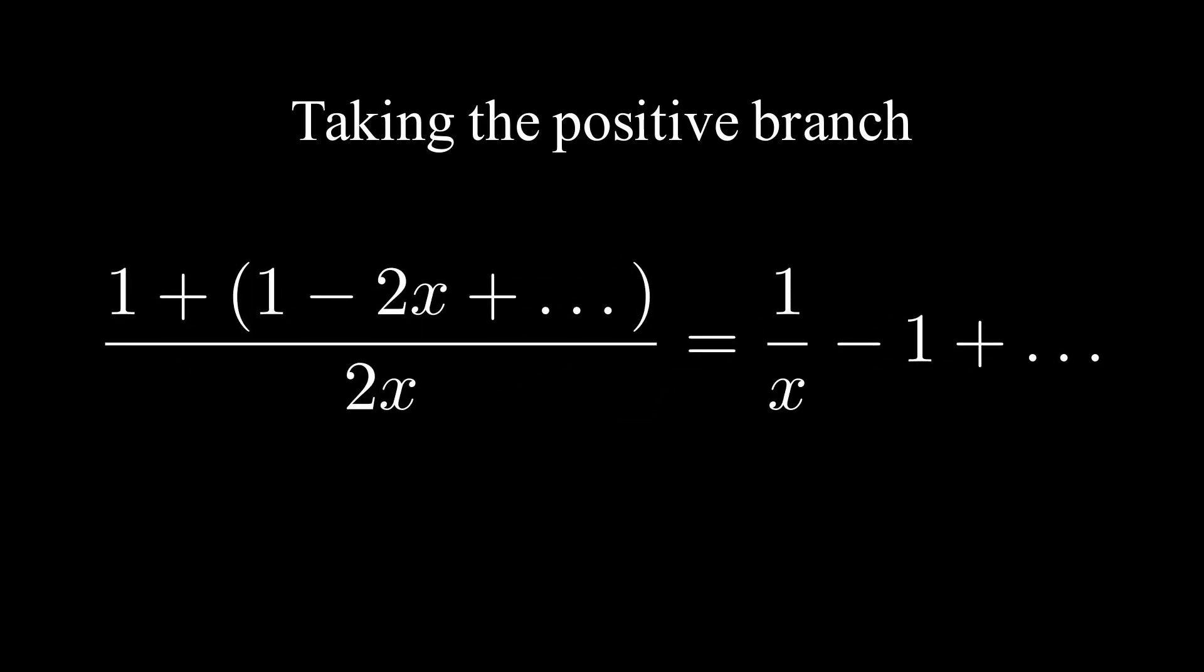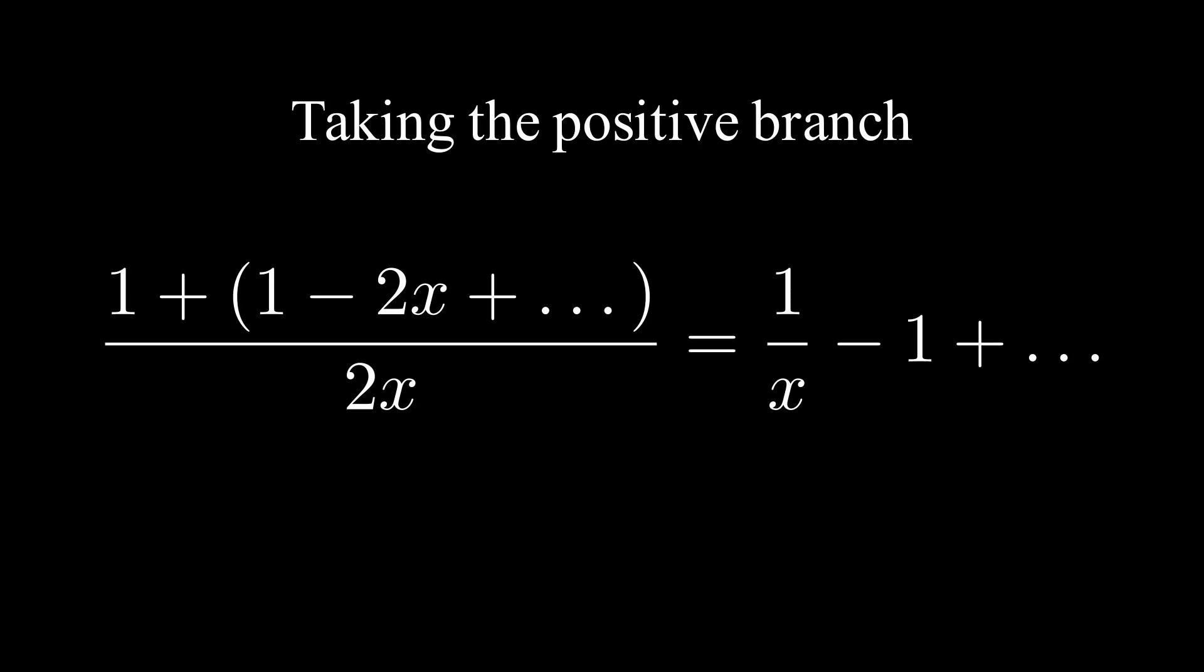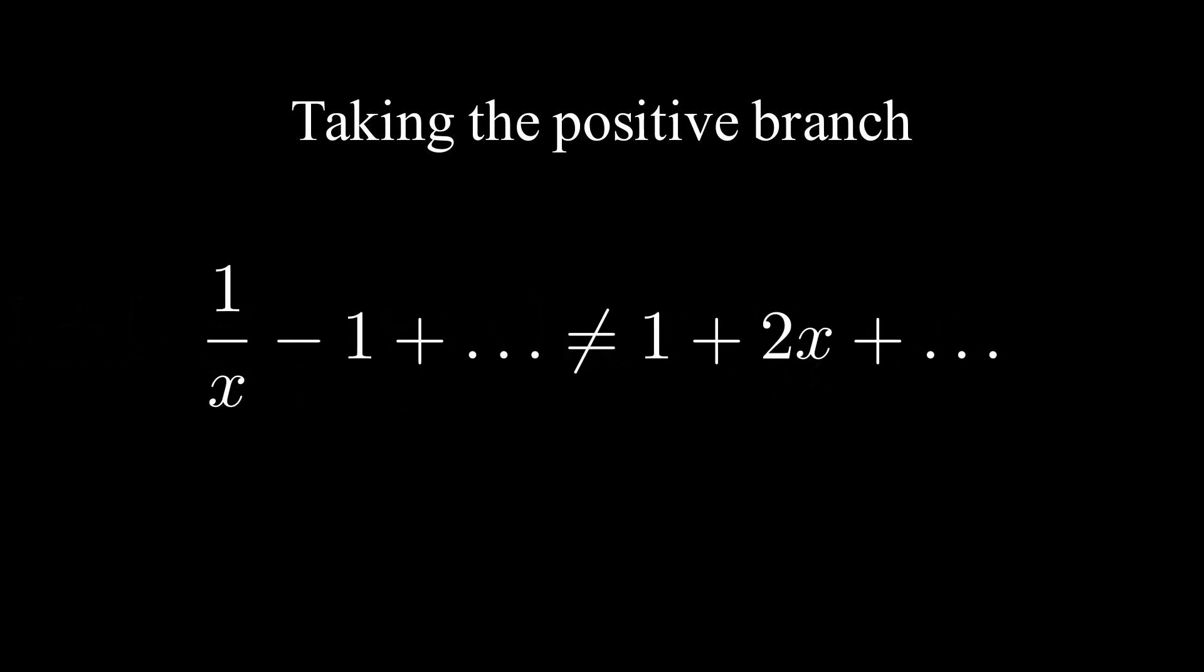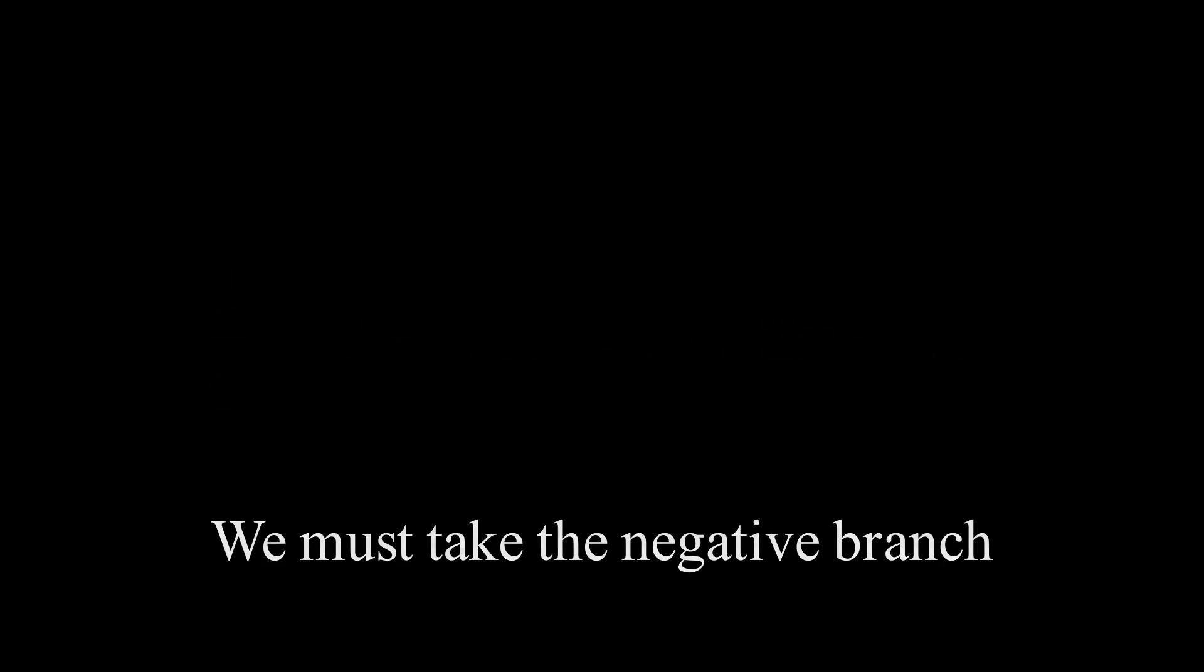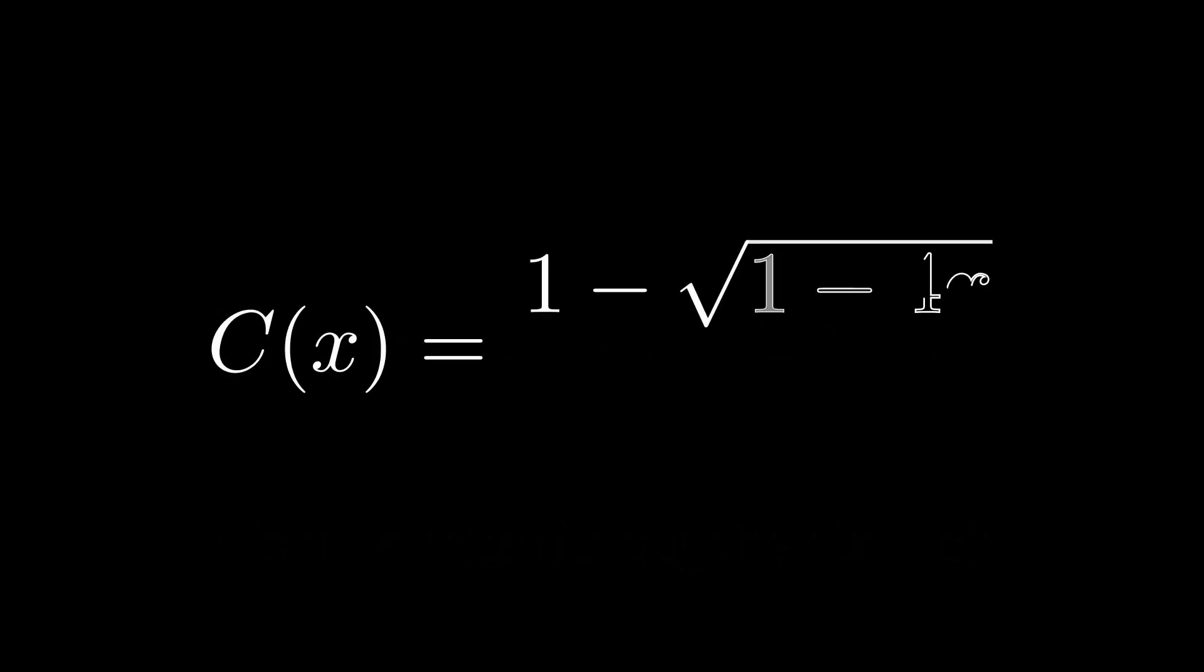Now, if we plug this expansion into our positive branch solution, we get a term of 1 over x on the right-hand side, which doesn't match our generating function. And so we must take the negative branch. We can check that this does indeed hold.